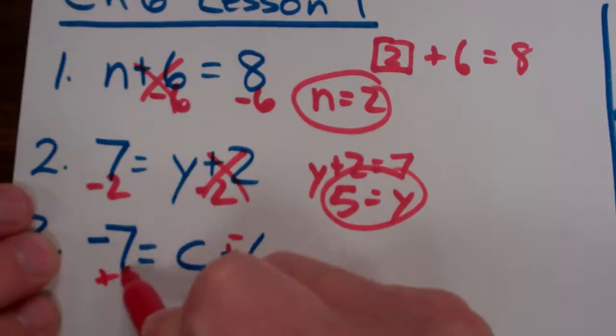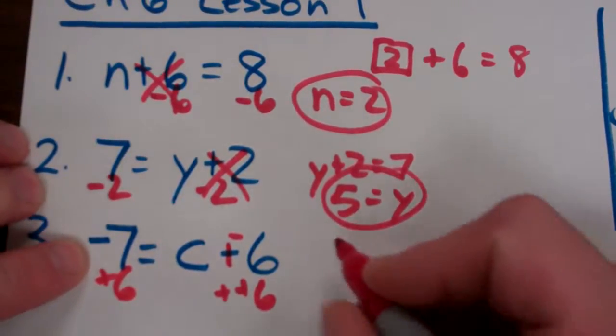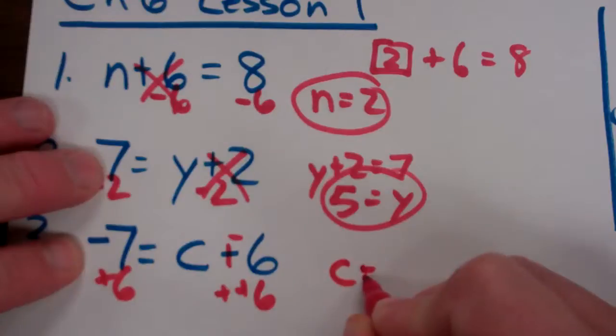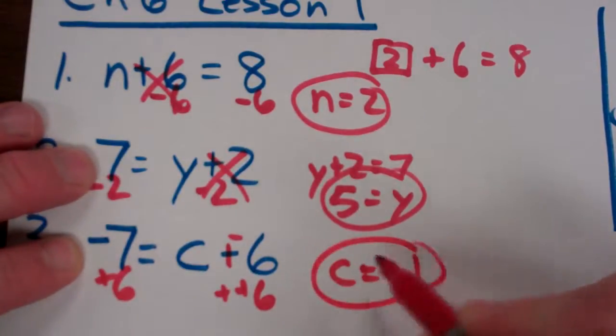And now I get different sign, subtract, sign of the larger, so c equals negative 1, or negative 1 equals c.